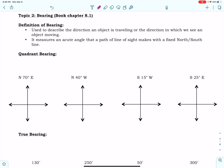Bearing is used to describe the direction an object is traveling or the direction in which we see an object moving. It measures an acute angle that a path or line of sight makes with a fixed North-South line. We're going to talk about two different kinds of bearing.